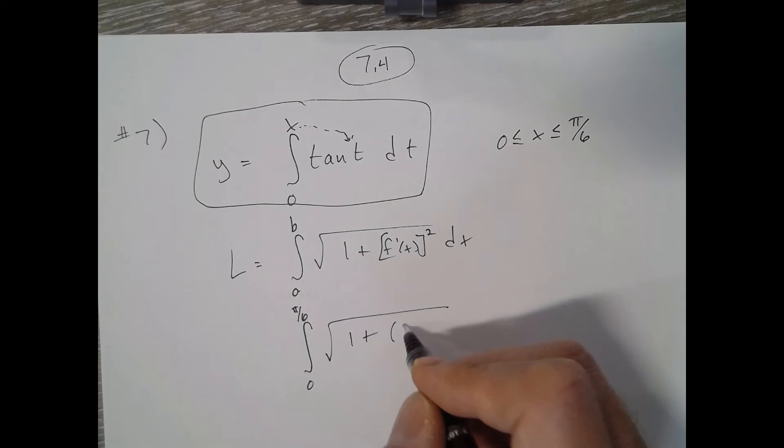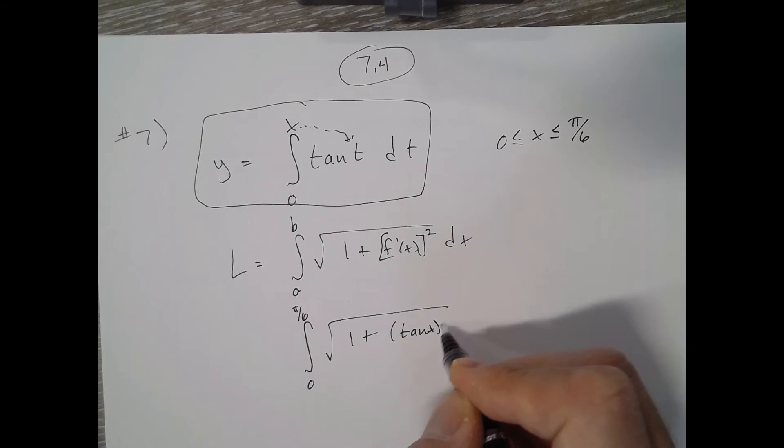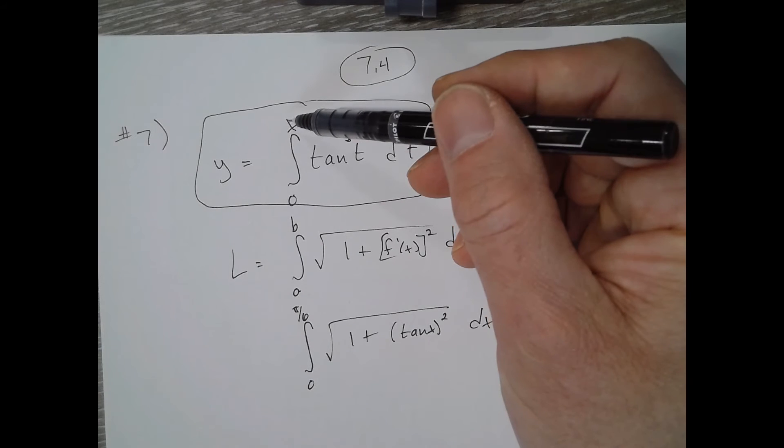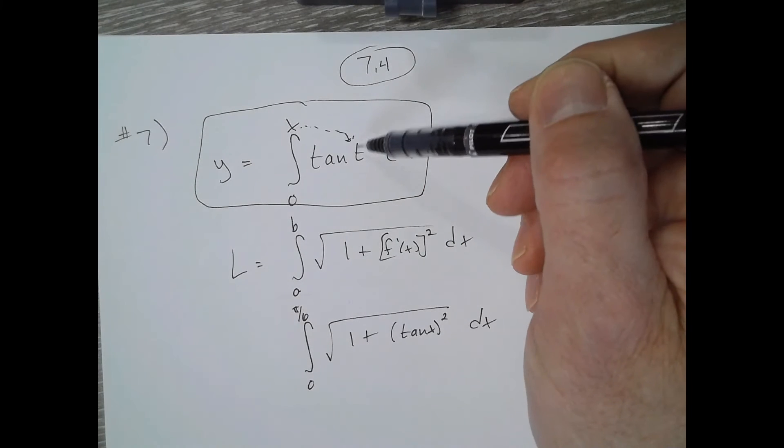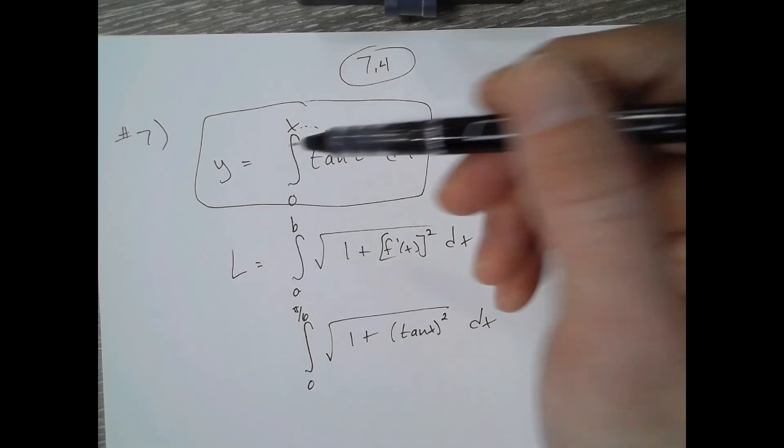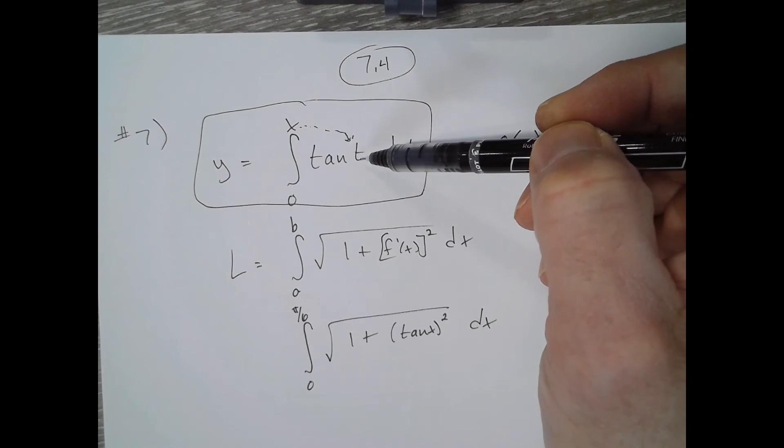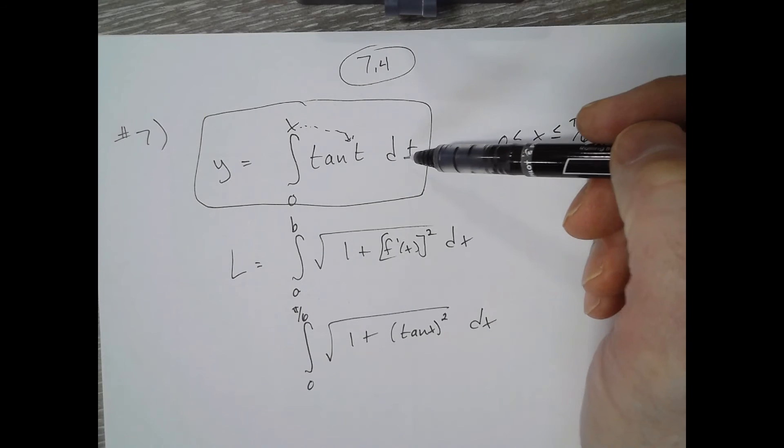So the derivative is tangent x. Now if it was 2x, we would drop in the 2x right there, and then we'd have to multiply our result by 2 because of the chain rule. But since it's just x, you replace your t with x, get rid of the t in the integral, and you get tangent x for the derivative.